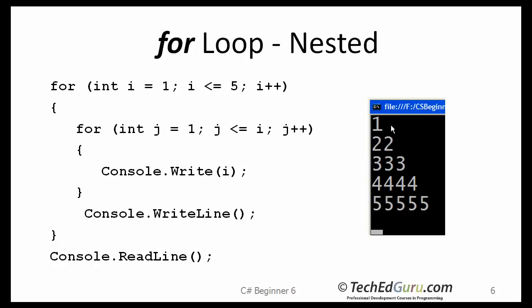It will print i equals 1, terminate the inner loop, go back here. i is going to be incremented by 1 which is 2. Now the inner loop is going to run twice.